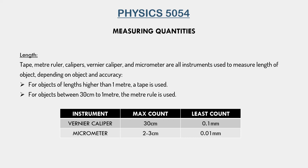For the vernier caliper and micrometer, it depends on how accurately we want to measure our value. The vernier caliper can measure up to 30 centimeters. A micrometer can only measure up to two or three centimeters. However, the reason for keeping an instrument that measures so little is that the micrometer is the most accurate of these — its least count is 0.01 millimeters, whereas the least count of a vernier caliper is 0.1 millimeters.